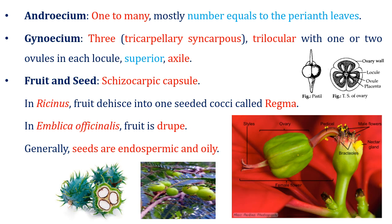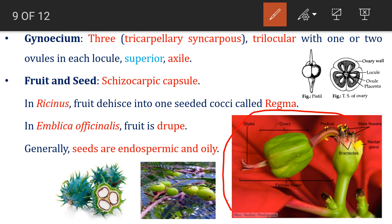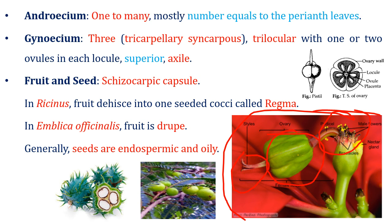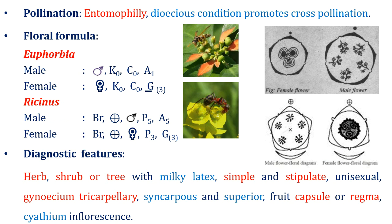In the Bentham and Hooker system of classification, family Euphorbiaceae consists of Emblica officinalis. But as per the recent system of classification, Emblica officinalis has been placed in a different family. Generally, seeds are endospermic and oily. Here you can see a view of cyathium inflorescence — three gynoecia are present and they are fused, so syncarpous, and there are many male flowers. Pollination is by entomophily. You can see images for insect pollination; because of the dioecious condition, cross-pollination is promoted.